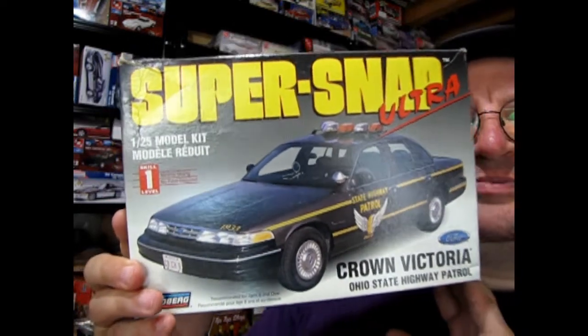Now today we've got a really interesting model kit. This is the 1997 Ford Crown Victoria, the Ohio State Highway Patrol model kit, and it's a scale level one snap together. Remember when these were all over the place back in the day? Did you pick one up?